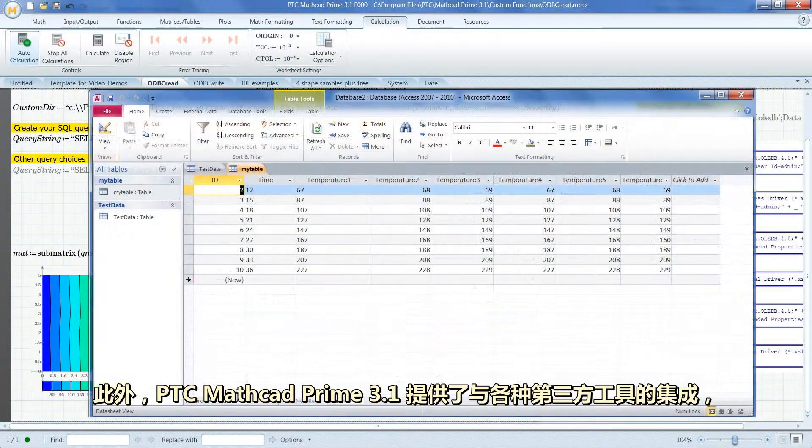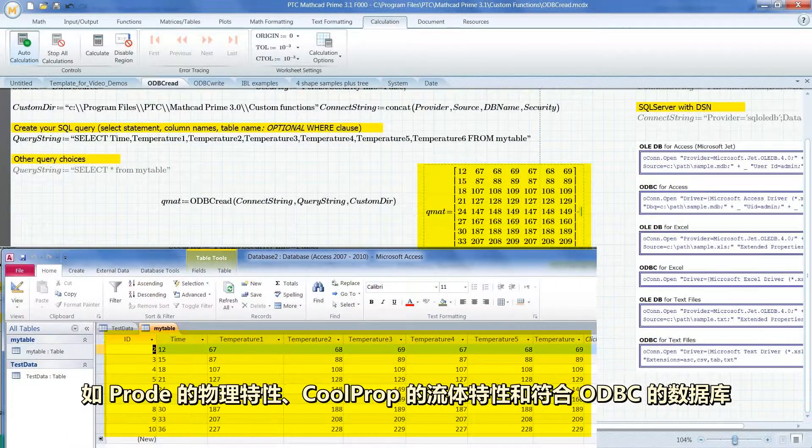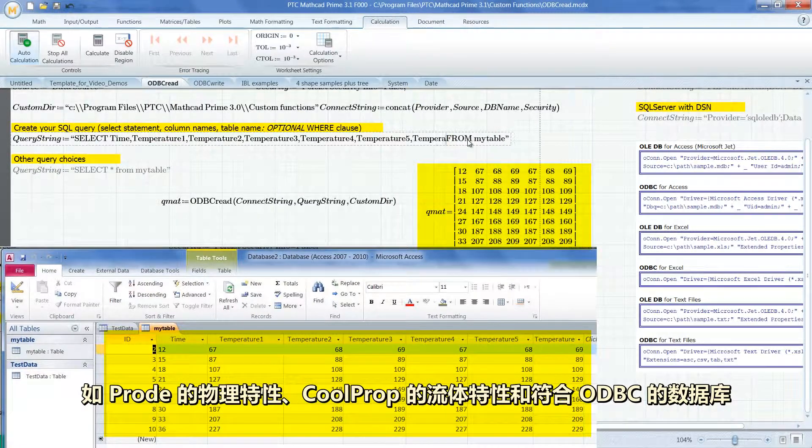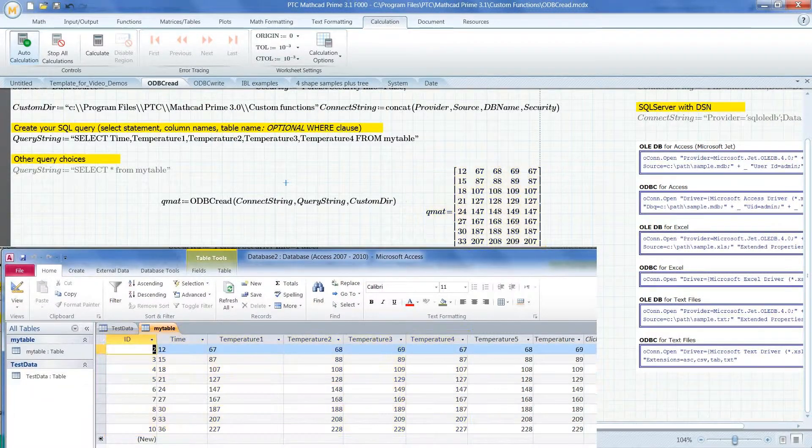Additionally, PTC MathCAD Prime 3.1 provides integrations with a variety of third-party tools, such as ProD's physical properties, CoolProp's fluid properties and ODBC-compliant databases.